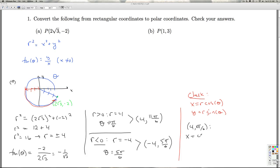x is 4 cosine 11 pi over 6. The cosine of 11 pi over 6 is radical 3 over 2, so I get 2 radical 3, which is what I'm supposed to get for the x.